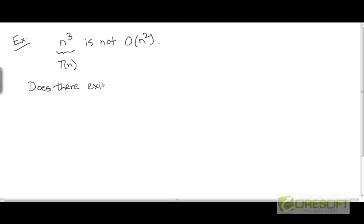say c₂, a positive constant c₂ such that for large n, that is once n goes beyond some threshold